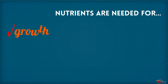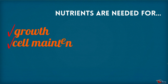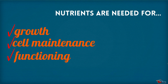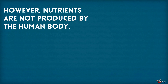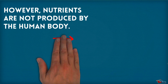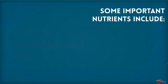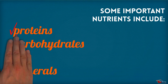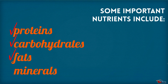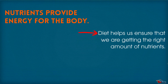Nutrients are needed for growth, cell maintenance, and functioning. However, nutrients are not produced by the human body — we get nutrients from the foods we eat. Some important nutrients include proteins, carbohydrates, fats, and minerals. Nutrients provide energy for the body, and diet helps us ensure that we are getting the right amount of nutrients.